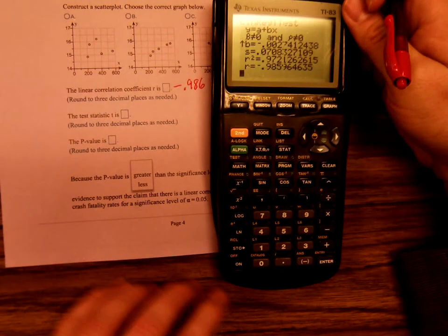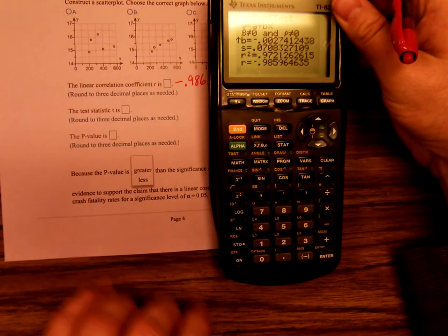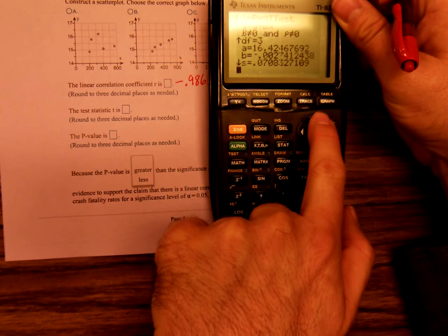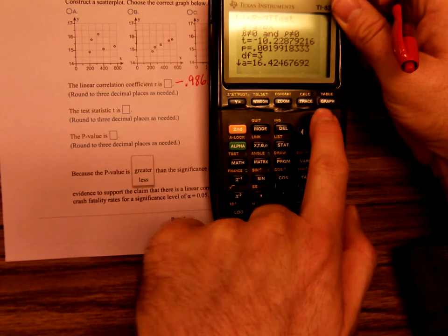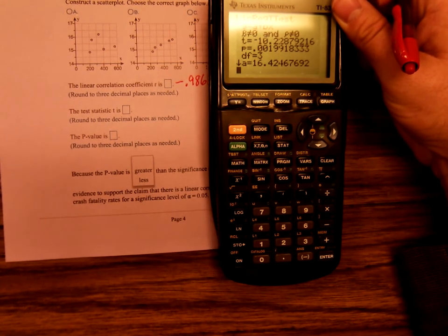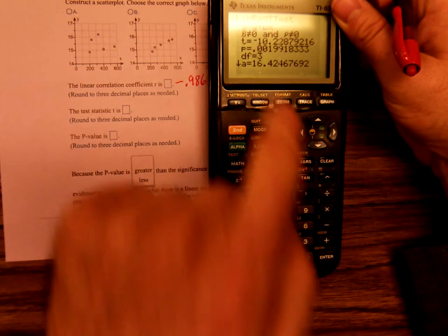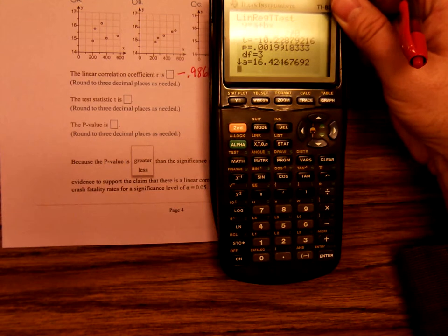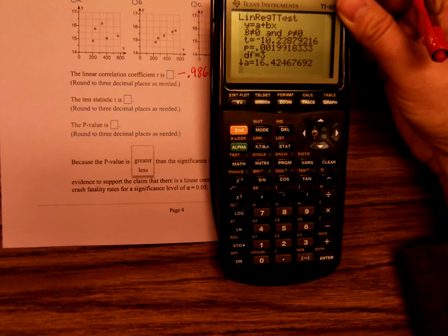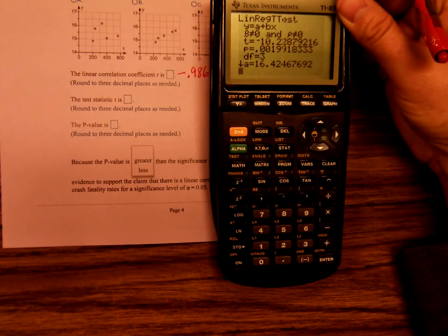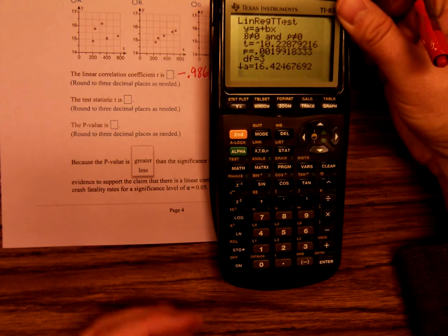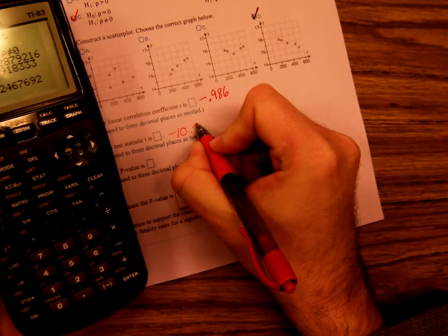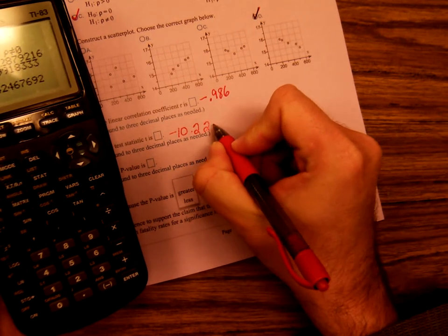The next thing it asks for is the test statistic. So let's see, that's t. And it's saying to three decimal places. Right up there, t equals, you'll see that, negative ten point two two nine.